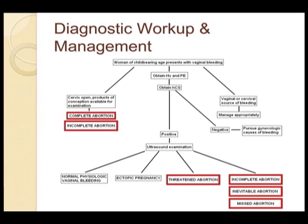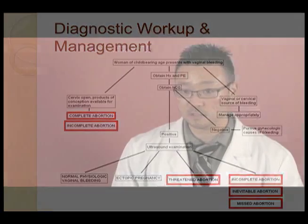If everything is normal within the fetus, the fetal sac, and cardiac activity, then this will be deemed normal physiologic vaginal bleeding. You want to reassure the patient that this is a normal process that can occur in about 20 to 40% of pregnant women in the first trimester.